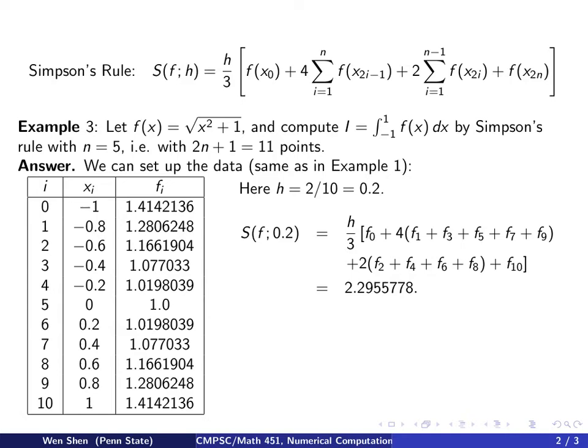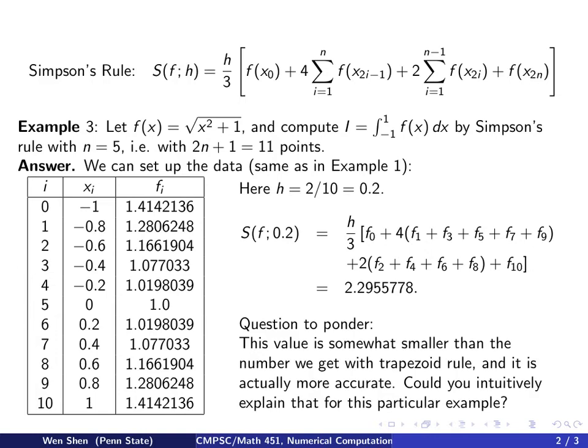If we compare this result with the same result we get for the same problem but using trapezoid rule, remember with trapezoid rule, the answer was 2.30030 something. So with the Simpson's rule, we actually get a number that is slightly smaller. So here's the question for you to ponder. Now this value is slightly smaller and I claim that this is actually a little bit more accurate. Could you intuitively explain how I could make this claim and why this claim holds for this particular example? So what's special about this example? Think about it.